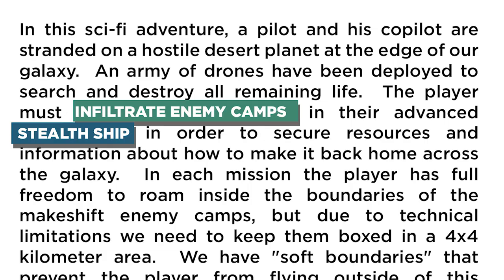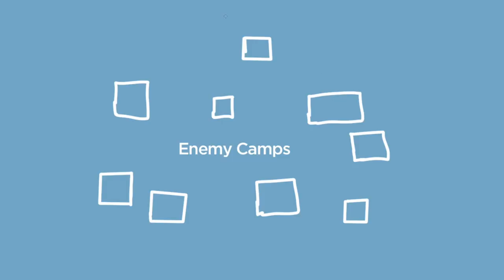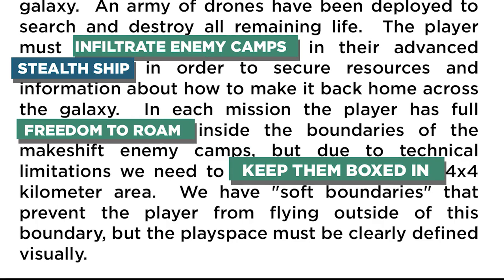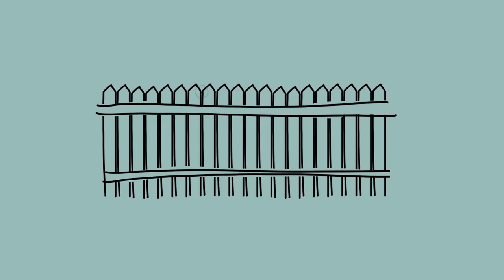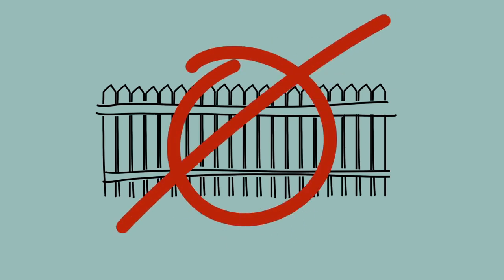In each mission, the player has full freedom to roam inside the boundaries of these makeshift enemy camps, but due to technical limitations, we need to keep them boxed in a 4x4 kilometer area. We'll have soft boundaries that prevent the player from flying outside of this boundary, but the play space must be clearly defined visually. The general challenge here seems to be making a fence that's, well, not really a fence, or at least one that's not a huge eyesore.